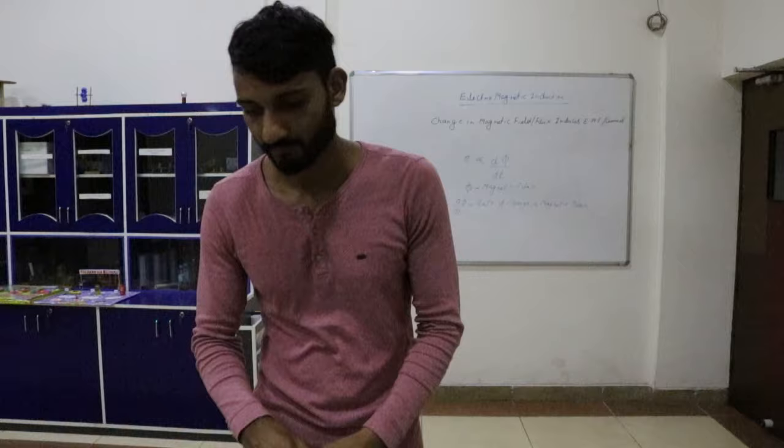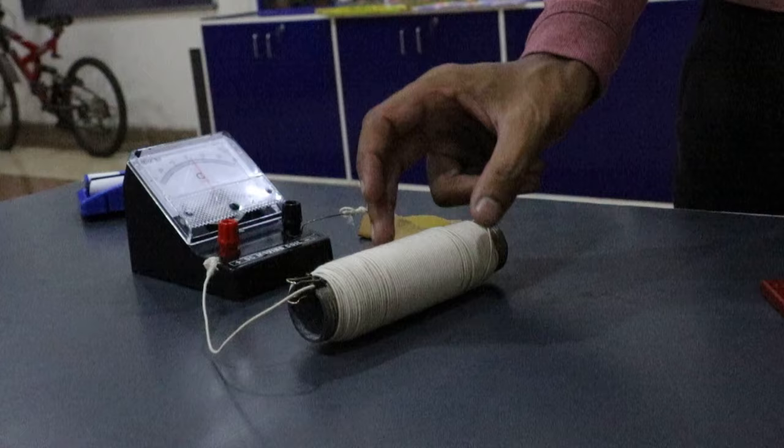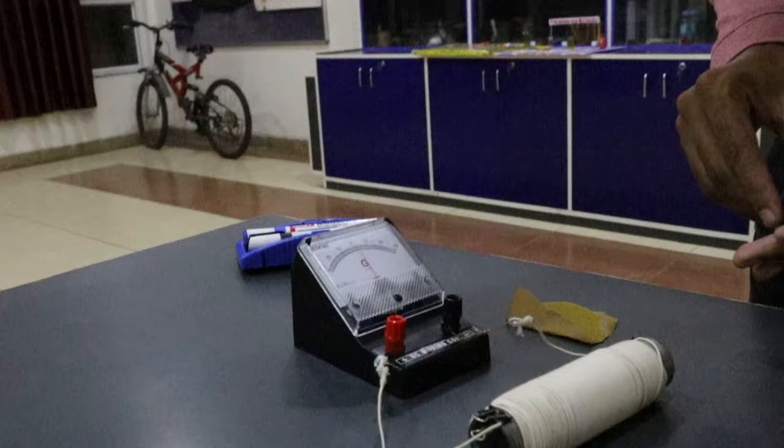To demonstrate that, we have our apparatus here, which consists of a bar magnet and a galvanometer. The galvanometer is a device which detects current. There is also a copper coil wound on this iron piece. Whenever a current is detected, there will be a deflection in the needle.